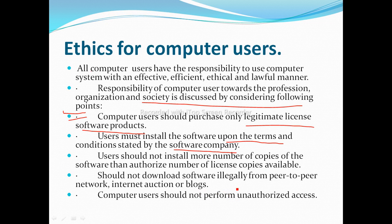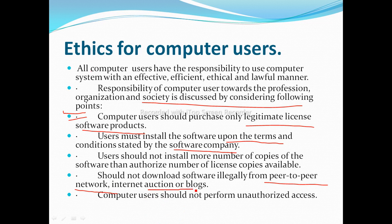Users should not install more copies of the software than the authorized number of licensed copies available. For example, if you have a Quick Heal antivirus licensed for 3 users, you should only use it for those 3 users — each can install and enter the license key once. Users should also not download software illegally from peer-to-peer networks, internet auctions, or blogs. In a peer-to-peer network there is no server — every computer is connected equally and can share the network, but we should not download software illegally through it.